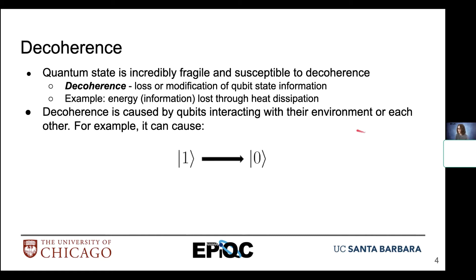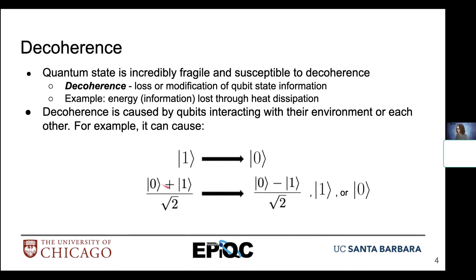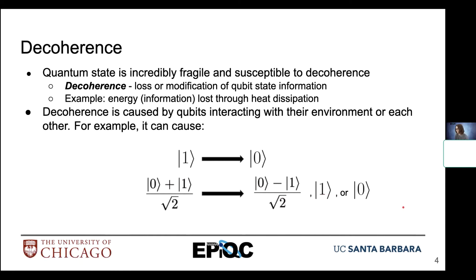For example, decoherence can cause a state of |1⟩ to convert into a state of |0⟩, or it can cause a superposition state created by the H gate to change from the positive superposition to one where we have a negative phase associated with it. Decoherence can also cause a superposition state to move more towards a |1⟩ or a |0⟩. These are just some examples — this is a non-all-inclusive list. The severity of decoherence can vary in intensity, and that intensity can accumulate over the course of an algorithm, determining how easy or difficult it is to correct.